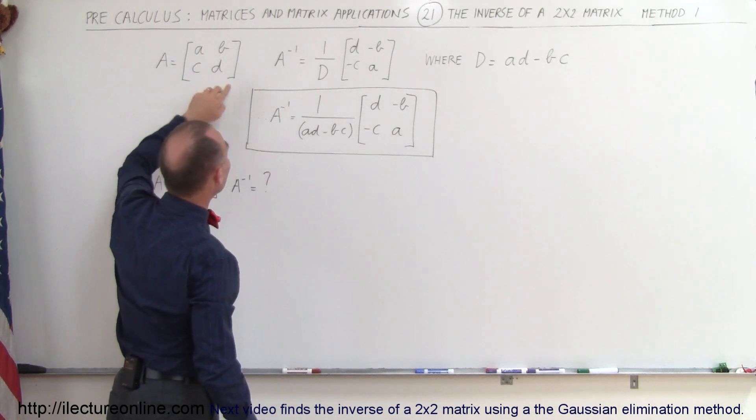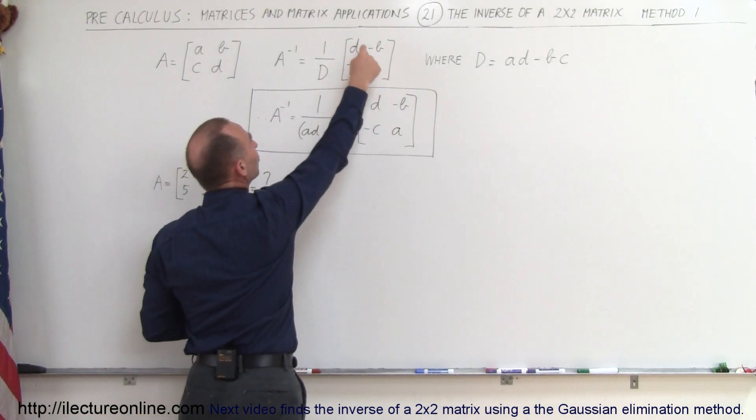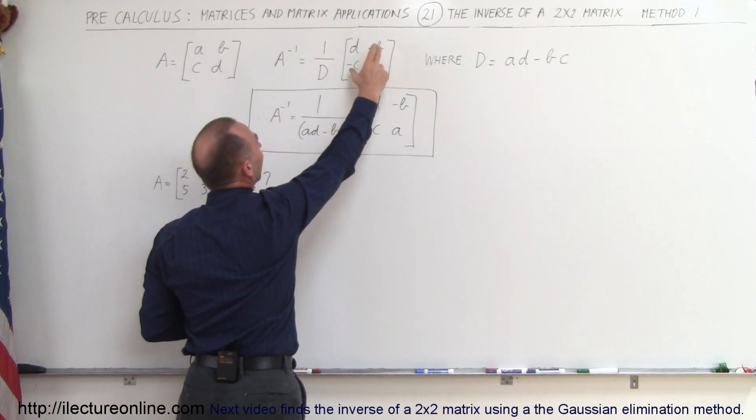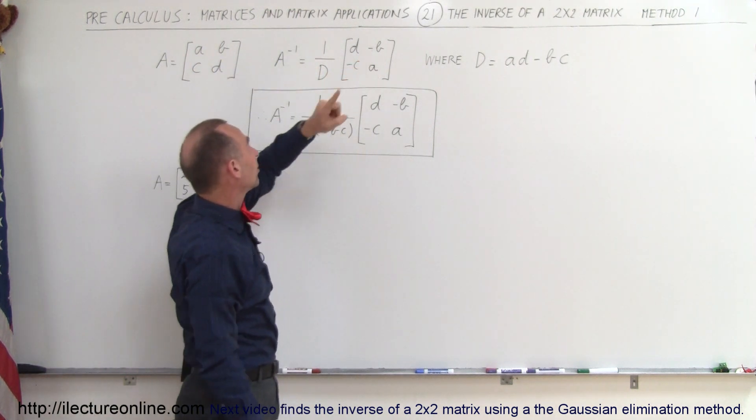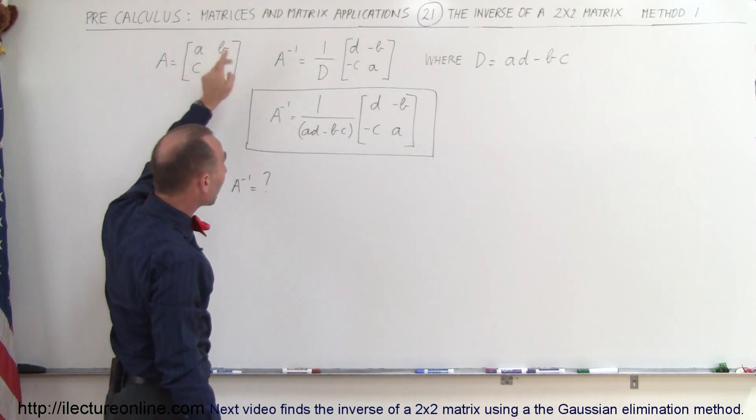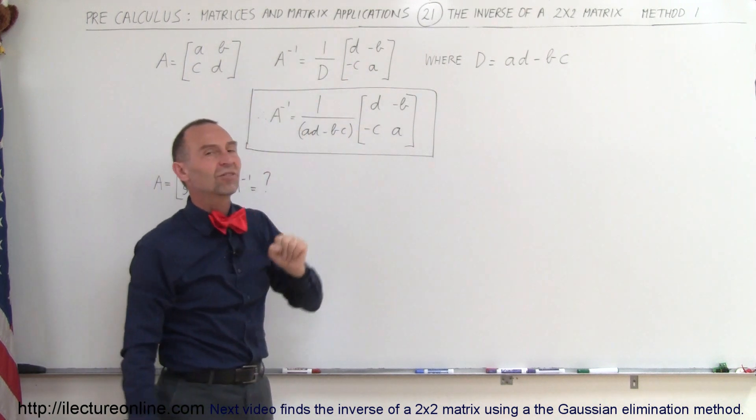Notice how a and d have been interchanged. So d moves up here, a moves down here, and b and c stays where they are, but they're now becoming the opposite sign. So if b was a negative, it will become positive, and if b was a positive, it will become negative. Same with c.